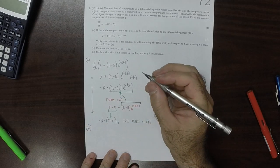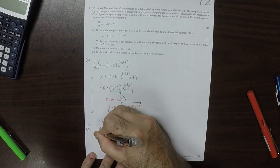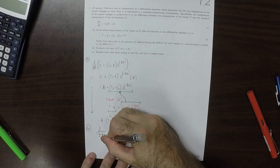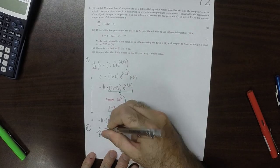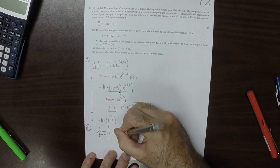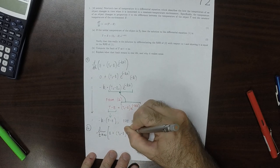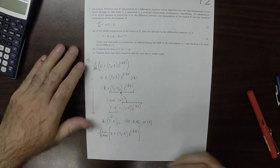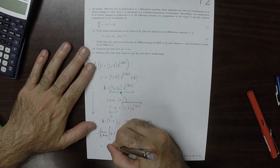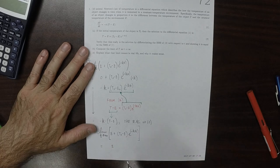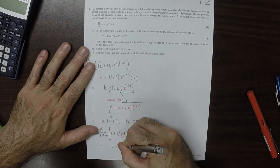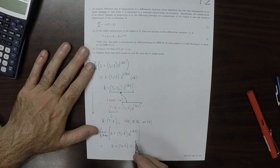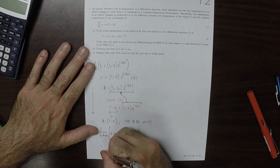Part b - the limit as t goes to infinity. That would be e plus t0 minus e exponential of negative kt. That's equal to e because that's just a constant, and then that would be plus t0 minus e, which is a constant, and then times 0, because the exponential decays to 0. So the limit is e.